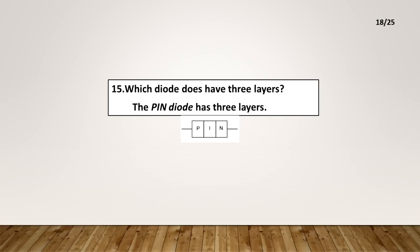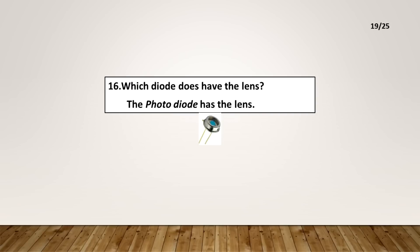Which diode does have three layers? The PIN diode has three layers. Which diode does have the lens? The photo diode has the lens.